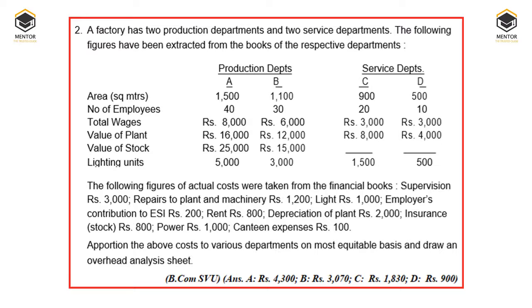A factory has two production departments A and B, and two service departments C and D. We have been provided with area, number of employees, total wages, value of plant, value of stock, and lighting units. The expenditure provided includes supervision, repairs to plant, lighting, employer's contribution to ESI (employee state insurance), rent, depreciation of plant, insurance on stock, power, and canteen expenses. We need to apportion the above costs to various departments on the most equitable basis and draw an overhead analysis sheet.